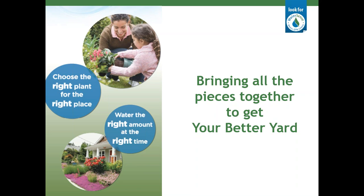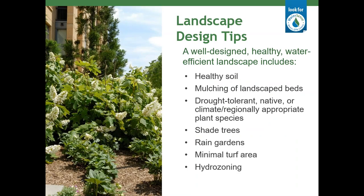In our presentation today, you'll hear from speakers showing how the whole landscape and irrigation system can work together. A well-designed landscape will minimize the need for supplemental water. The principal components of a water-efficient landscape are healthy soils with appropriate grading, mulching, regionally appropriate plant choices, appropriately sized turf areas, and hydrozones. Healthy soils help develop deep plant root systems and allow water to properly infiltrate.